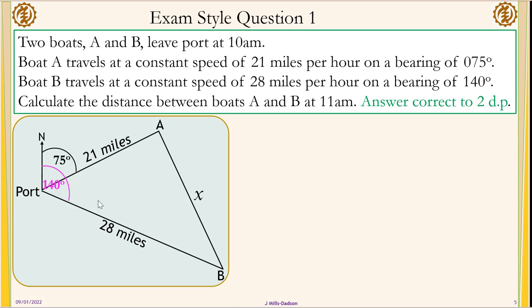This is the sketch of the problem. This is the port. Boat A 21 miles away from the port bearing 75 degrees. Boat B 28 miles away from the port bearing 140 degrees. We are supposed to work out A and B distance. I call it x.